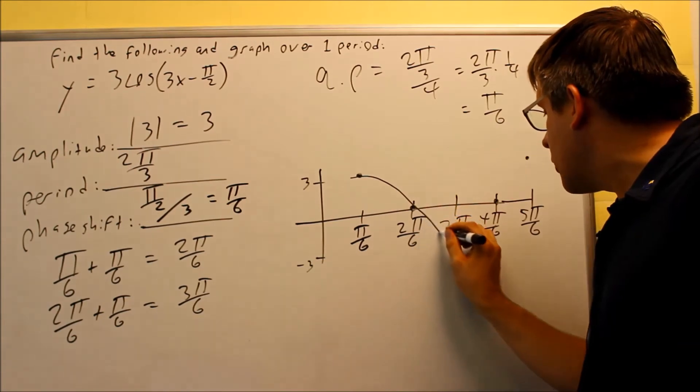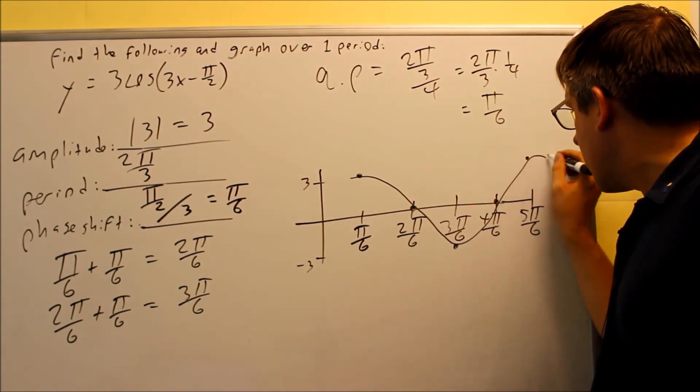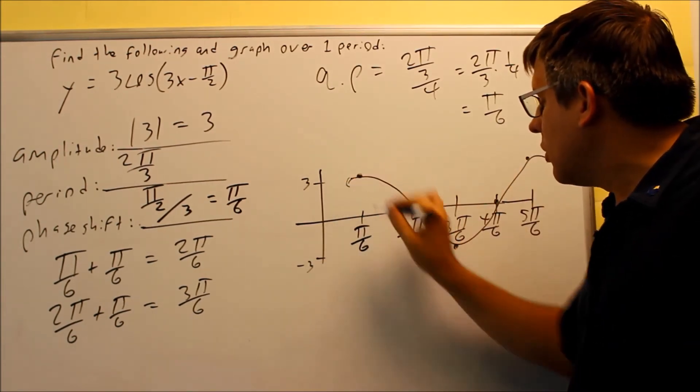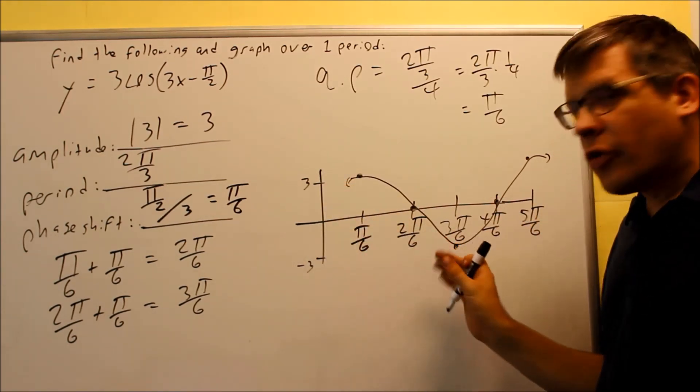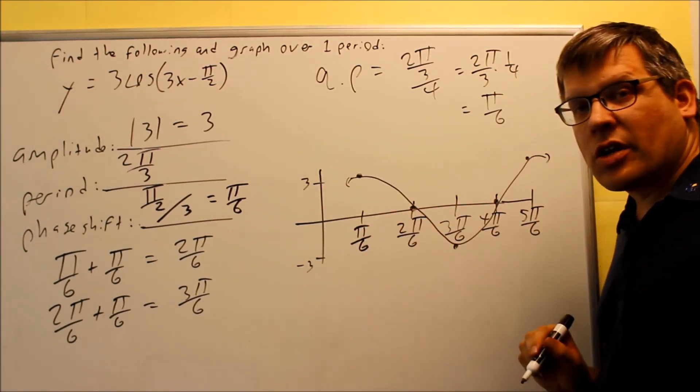So your graph itself now is going to look like this. So again, we're just drawing one cycle. And the cycle itself, that normally would start here, got moved over to the right by the amount of π over 6.